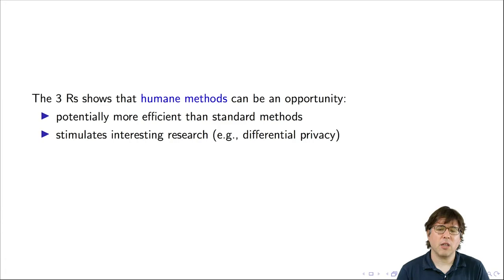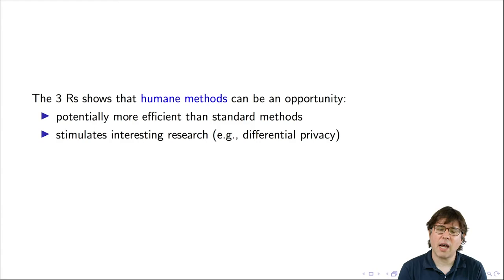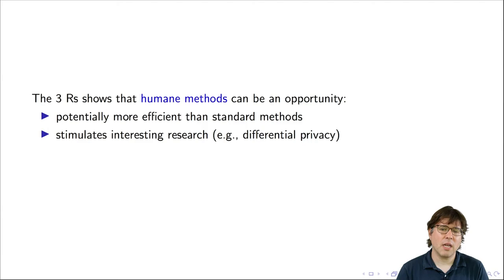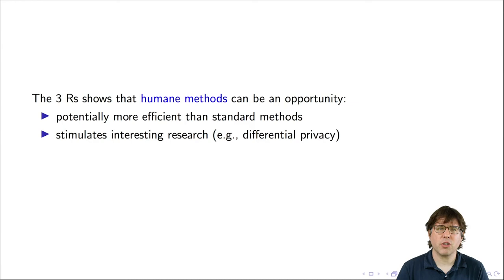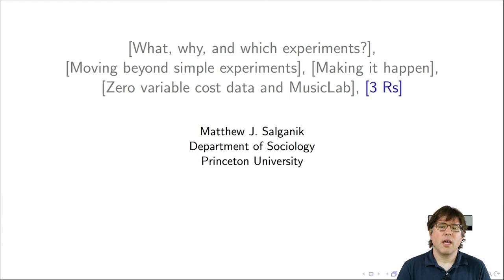My favorite example is differential privacy. Imagine we want to know whether smoking causes cancer using electronic medical records. There are good reasons why researchers shouldn't have access to individual-level records, but aggregate patterns — like whether smokers are more or less likely to get cancer — are likely not privacy-violating. Differential privacy is a set of mathematical, statistical, and computer science techniques that allow researchers to learn about aggregate patterns in data without learning about any individual person. It's a very exciting area of research and shows that a desire for more humane methods can stimulate new research.